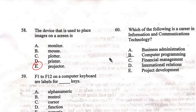Question 59: 'F1 to F12 on a computer keyboard are labels for — keys.' Once you get your computer, look at the first set of buttons close to the on/off button — you will see F1, F2, down to F12. The options are: A) alphanumeric, B) control, C) crucial, D) function, E) numeric. The right answer is D, function — they are the function keys.